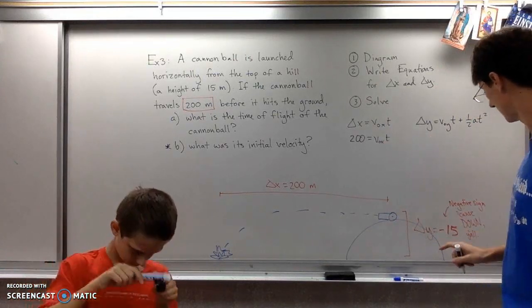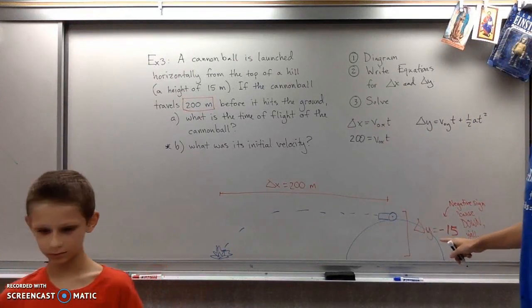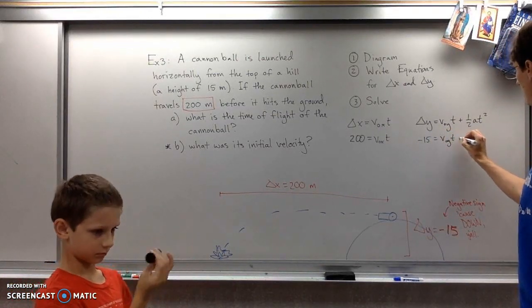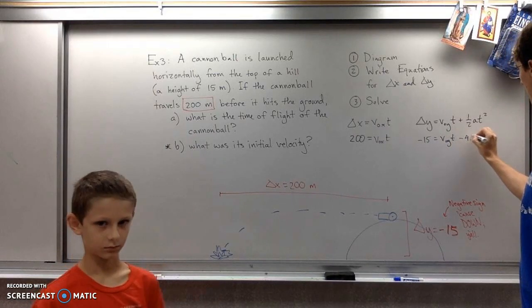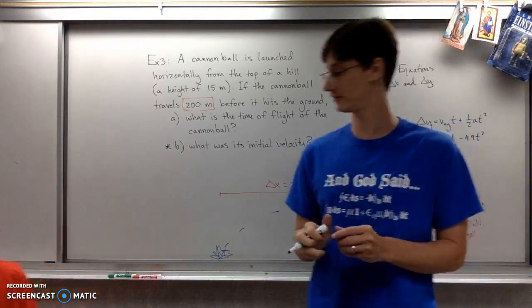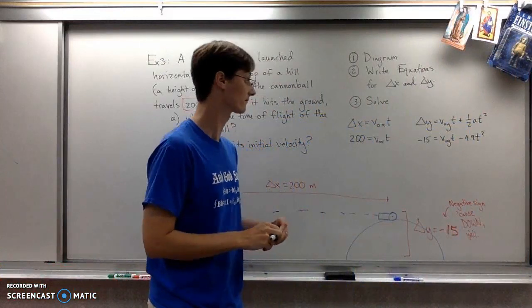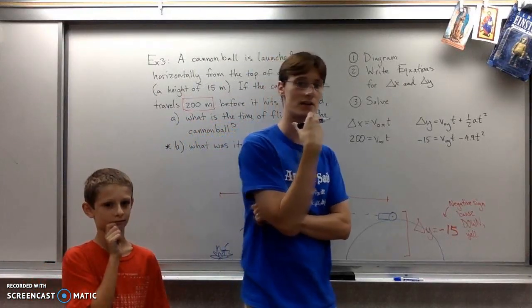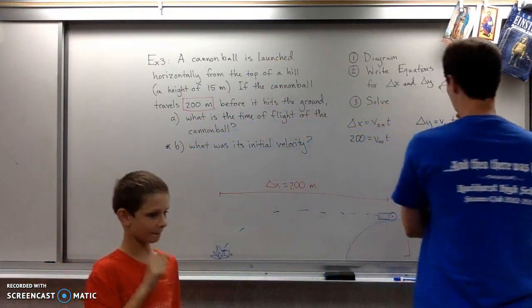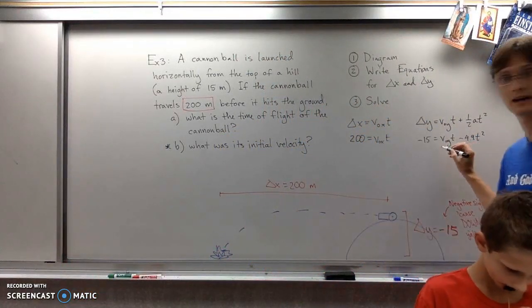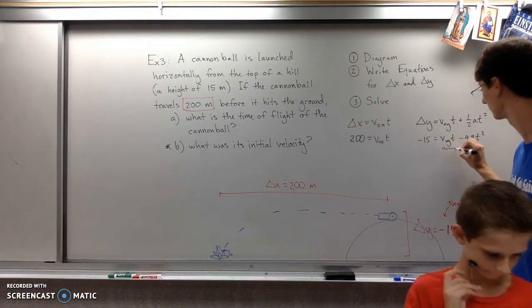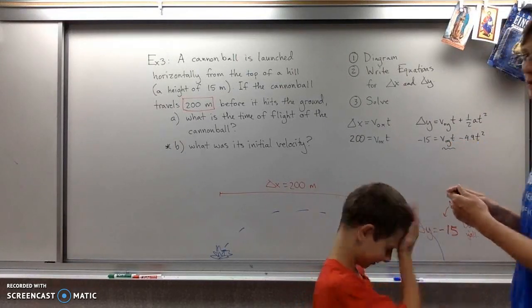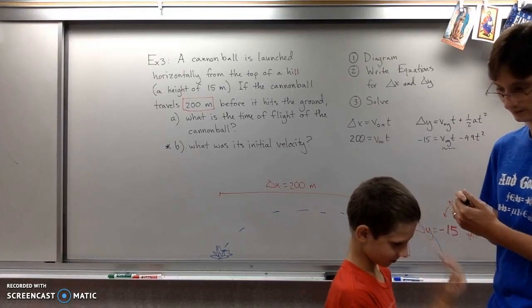For delta y, we put in negative 15 and one-half of 9.8. Looking at that equation, we don't have enough information because I don't know what v-naught y is. This problem is flawed, and I should go home.